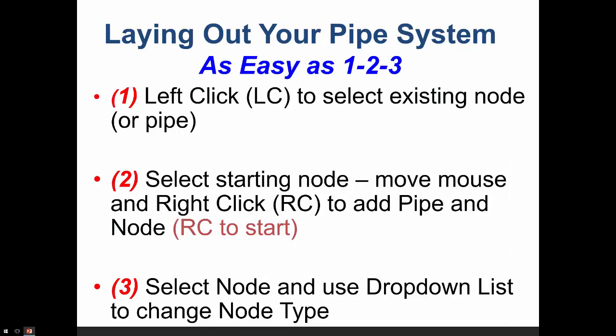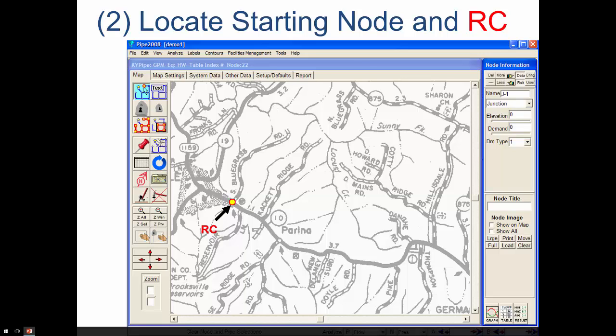Laying out your pipe system is really as simple as 1, 2, 3 as we indicate here. Step 1 is a left-click, where you can select an existing node or pipe. Step 2 is a right-click, which will allow you to lay down a node — either a starting node or an additional node with a pipe connecting to the selected node. And finally, you can use the mouse to select a node and from a drop-down list change it to any number of types of nodes: pumps, reservoirs, tanks — maybe 20 different choices.